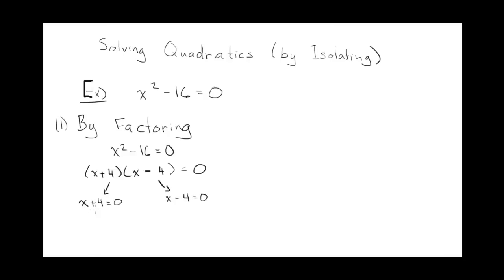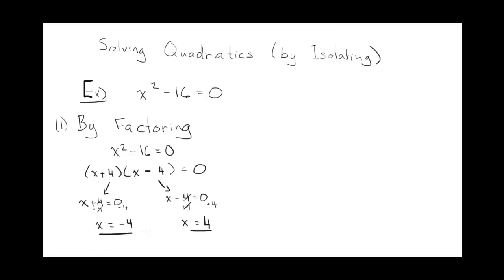To solve the first one, you would subtract 4 from both sides, so x equals negative 4. And here you would add 4 to both sides, so 0 plus 4 is positive 4. And there are your two roots.